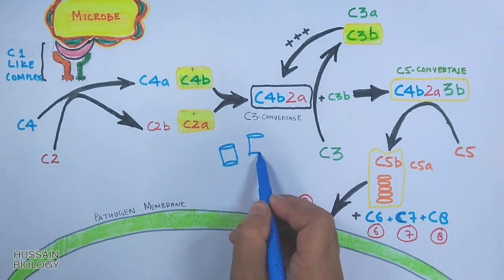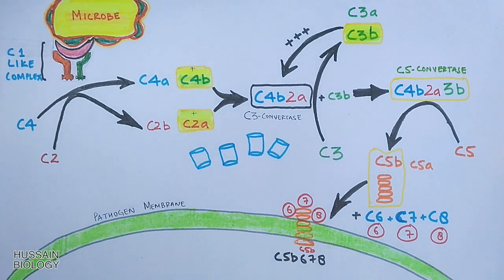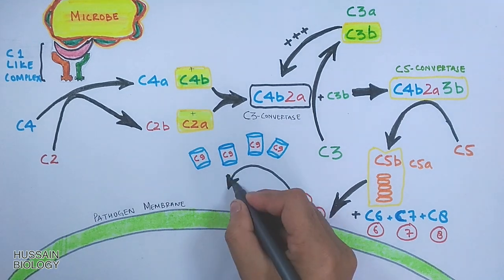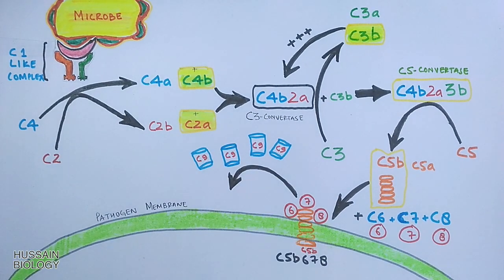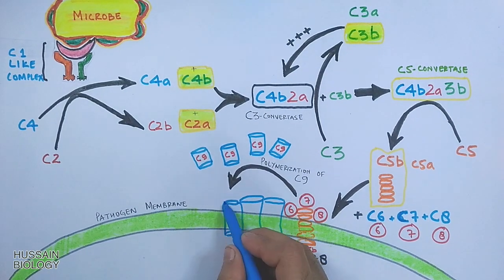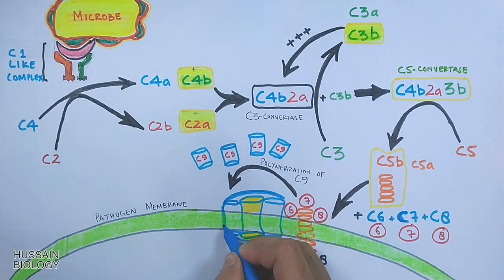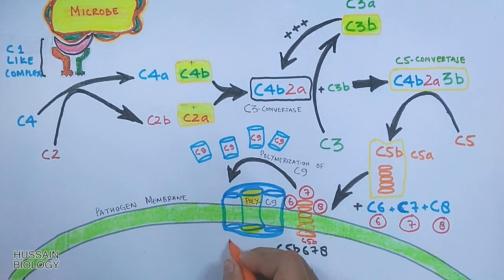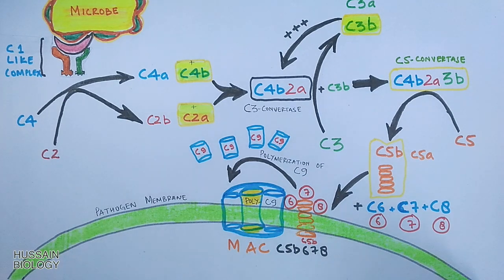On the surface of the pathogen, there are many C9 proteins. These C9 proteins must be incorporated into the pathogen membrane to form the membrane attack complex (MAC). The C5b678 complex polymerizes the C9 proteins into the pathogen membrane, forming a poly-C9 complex along with the other complement proteins. Now MAC is formed on the pathogen membrane through the lectin-mediated pathway.